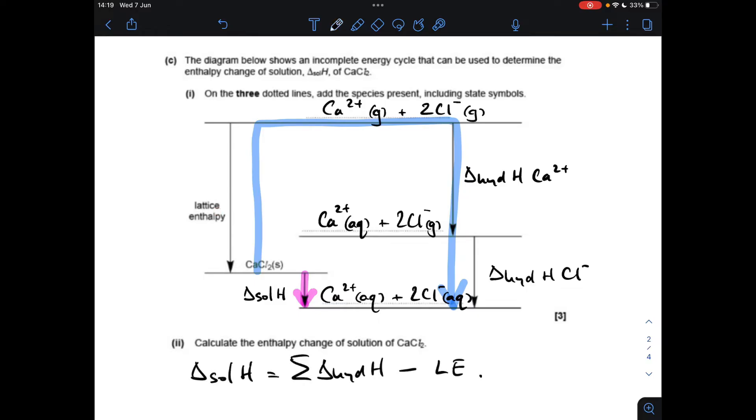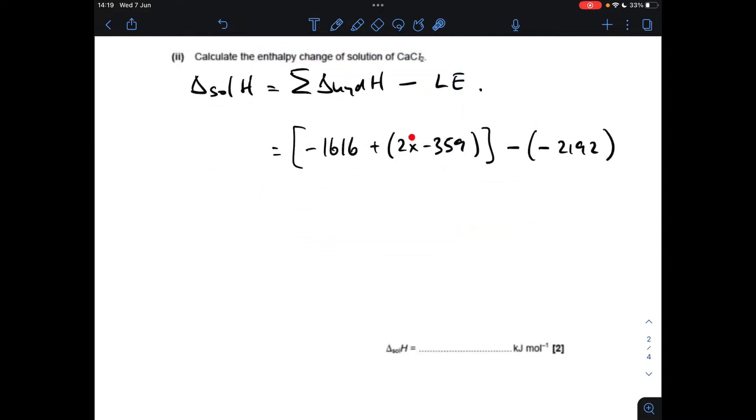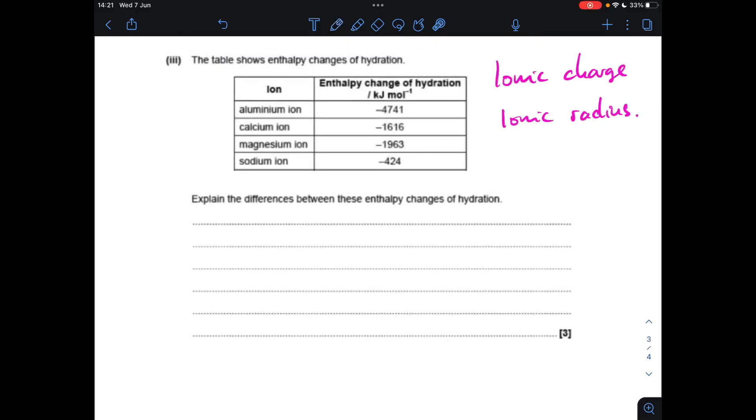So all I need to do now is put the numbers in from the table. So there's the numbers there. Just remember to double the enthalpy change of hydration of chloride ions because there's two moles of them in the cycle. So the answer comes out at -142 kilojoules per mole.